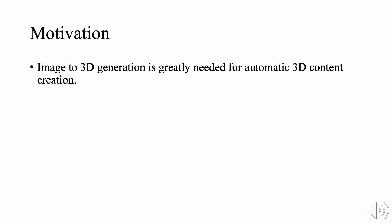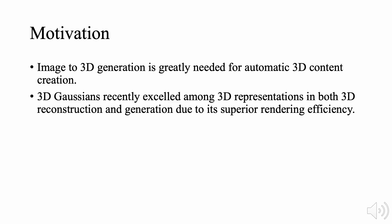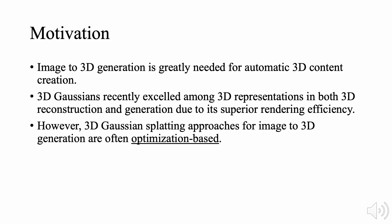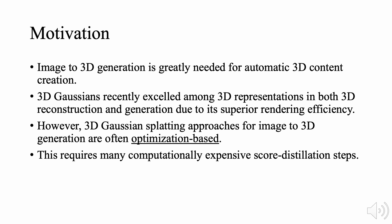Image to 3D generation is greatly needed for automatic 3D content creation. Recently, 3D Gaussians excelled among 3D representations in both 3D reconstruction and generation due to their superior rendering efficiency. However, 3D Gaussian splatting approaches for image to 3D generation are often optimization-based, requiring many computationally expensive score distillation steps.